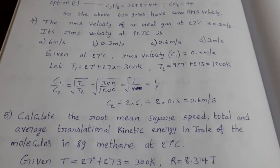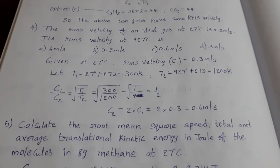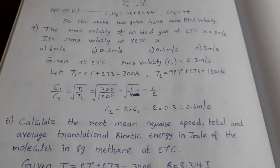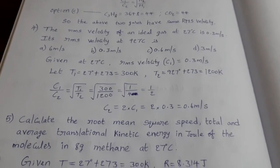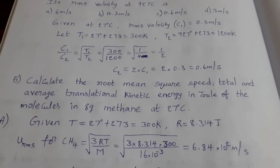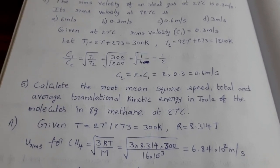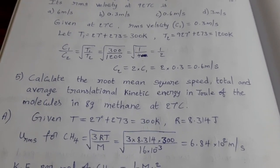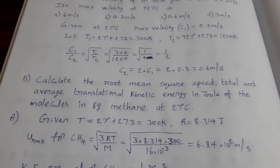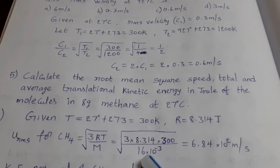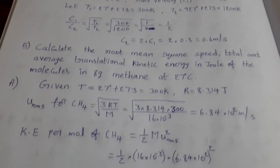Calculate the root mean square speed, total and average translational kinetic energy in joules of the molecules in 8 grams of methane at 27°C. Given T = 300 K, R = 8.314 J. RMS velocity for CH₄ = √(3RT/M) = √(3 × 8.314 × 300 / (16×10⁻³)) = 6.84×10² m/s. Molar mass is taken in kilograms because R is in joules.